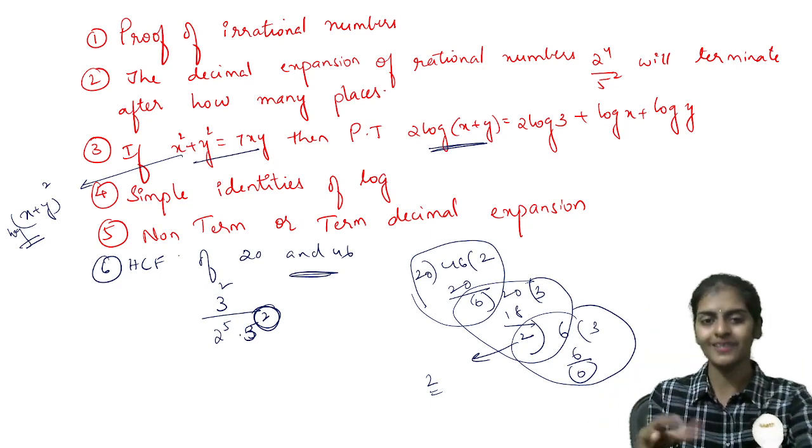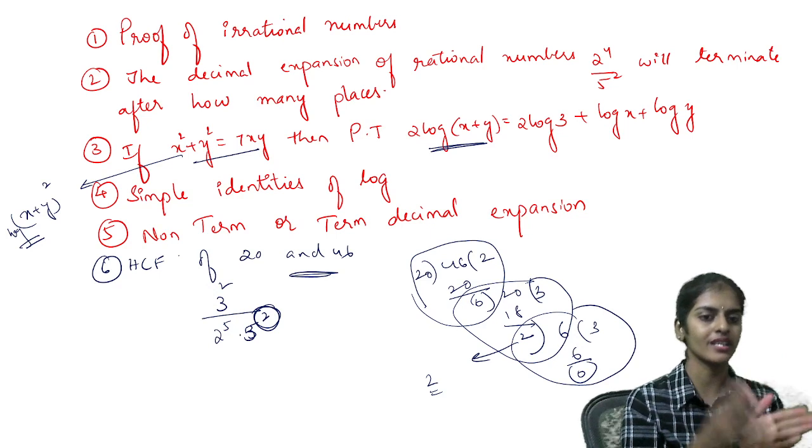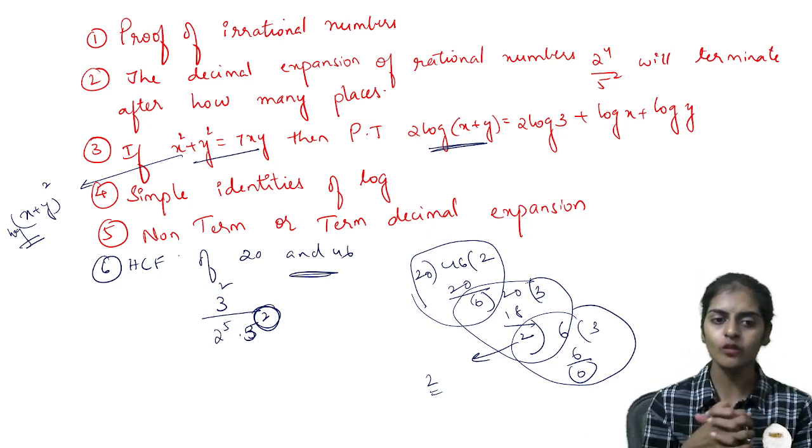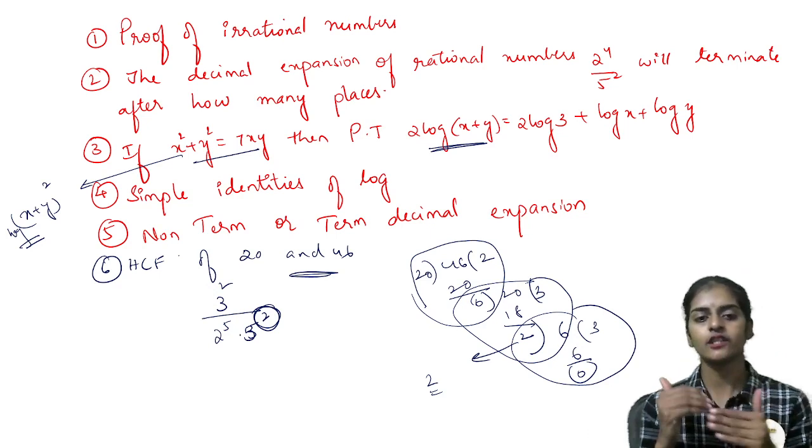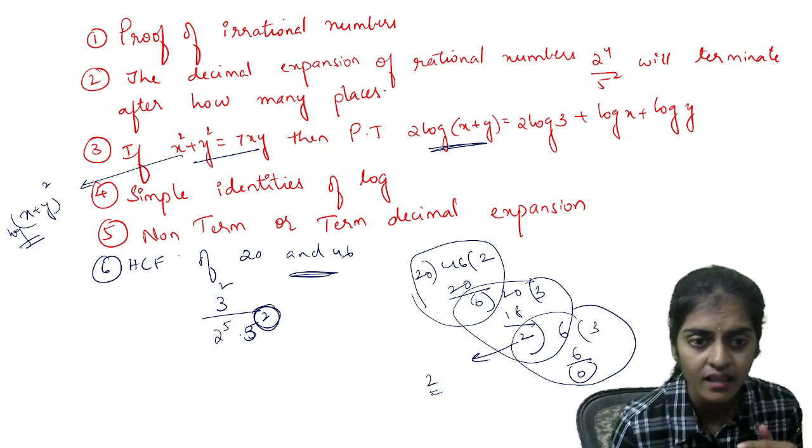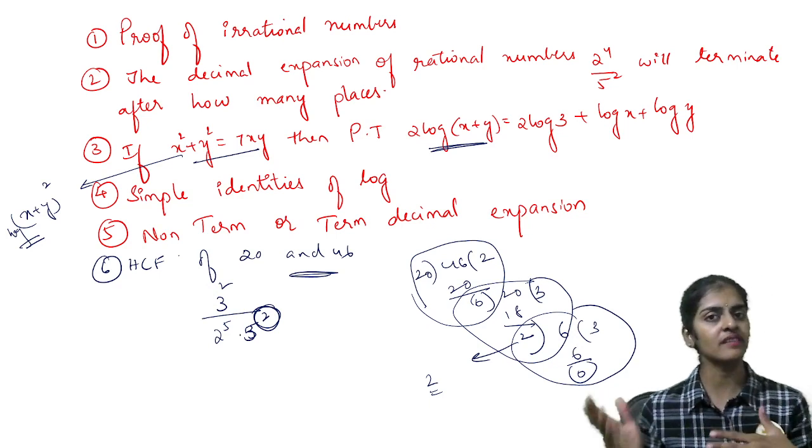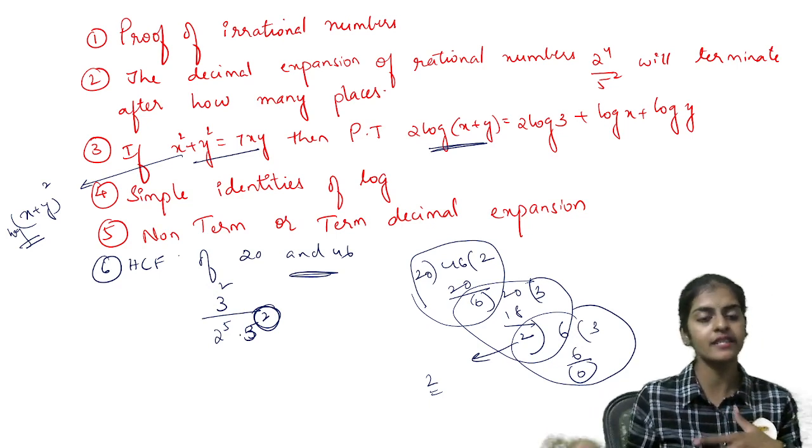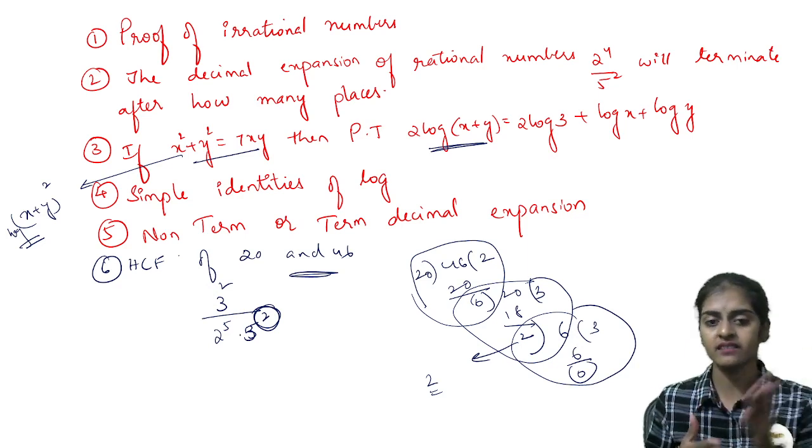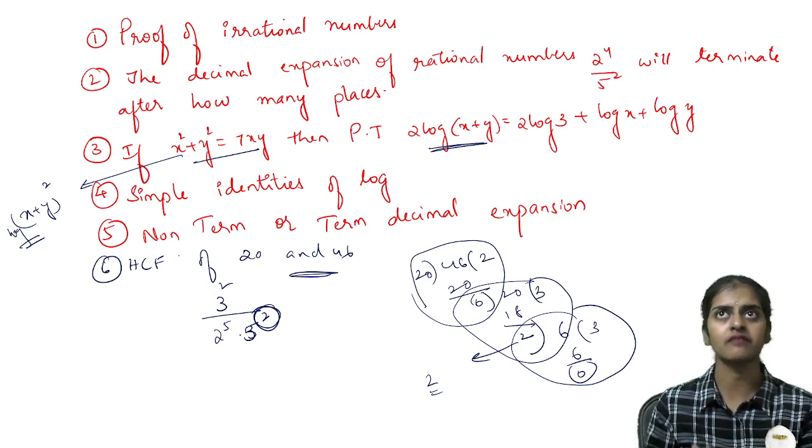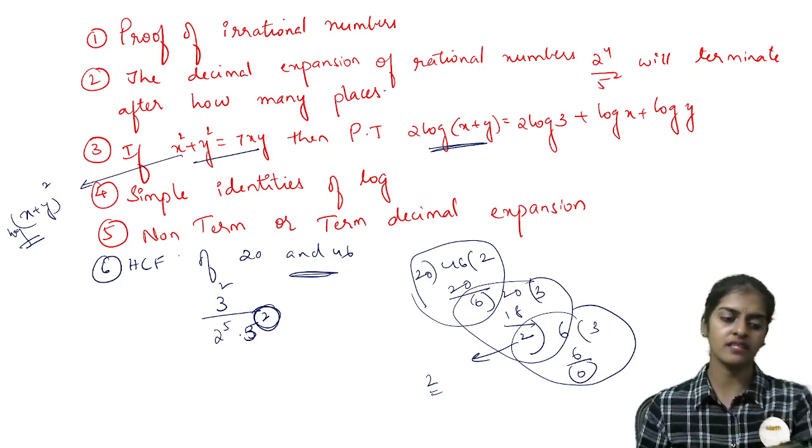This is what you'll do in rough work. In the main sheet, write: 46 = 20 × 2 + 6, then 20 = 6 × 3 + 2, then 6 = 2 × 3 + 0. Wherever you get remainder 0, the divisor at that step is the HCF.